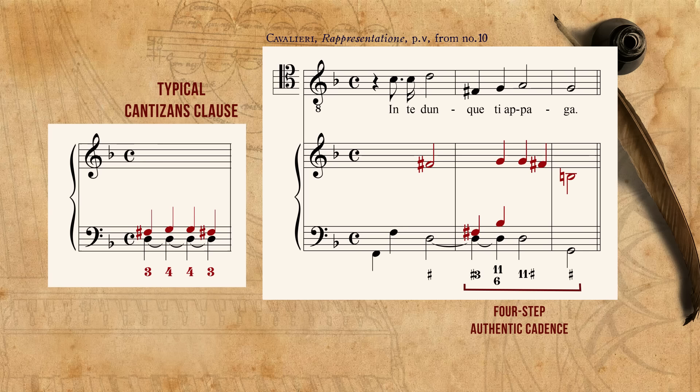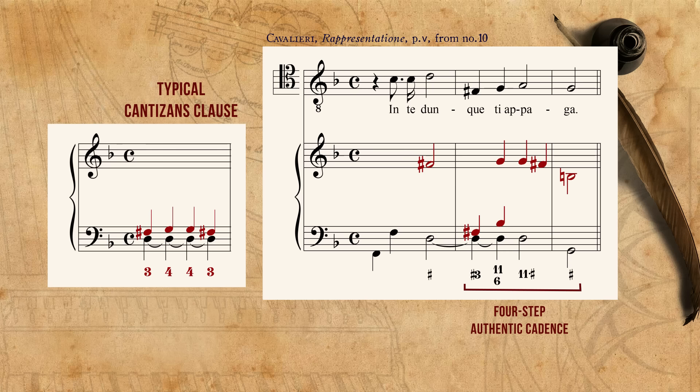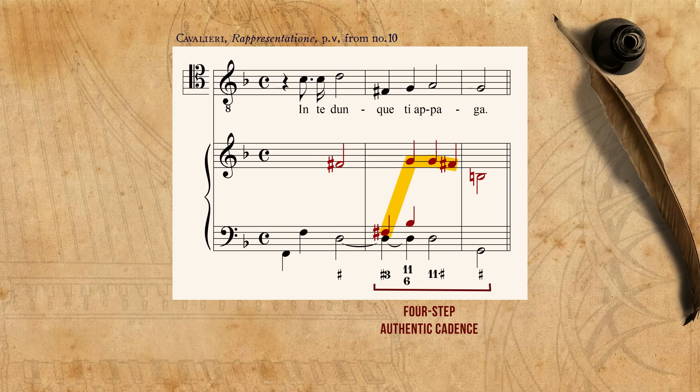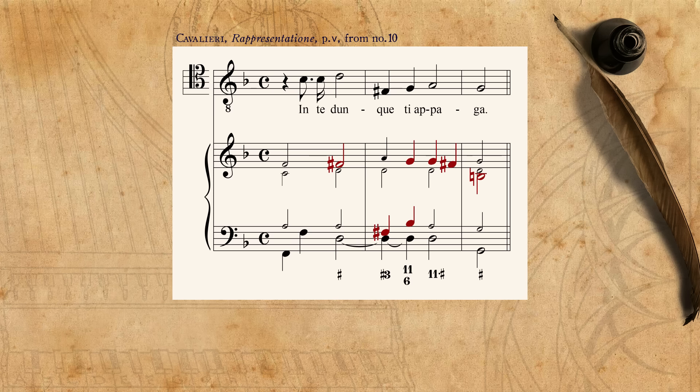Here we have another four-step cadence, but if normally the cantizans clause stays on the same level — three, four, three, or tenth, eleven, tenth — here it starts low on a three, and ends up high with eleventh, tenth. Again, this specific configuration can lead to an interesting voice leading.